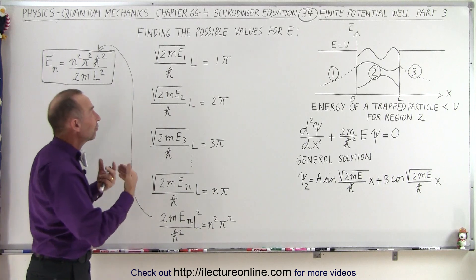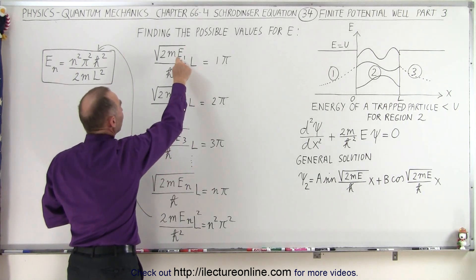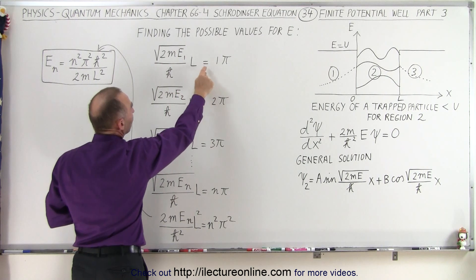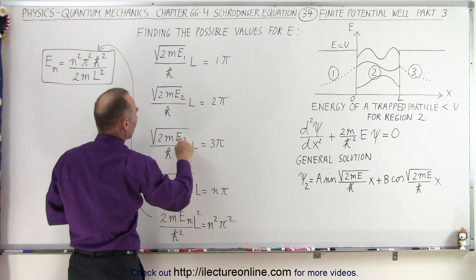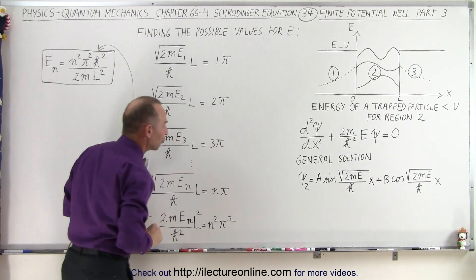So we have various values for E: E₁ corresponds to 1π, E₂ to 2π, E₃ to 3π, and so forth.